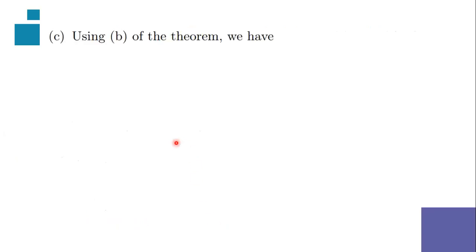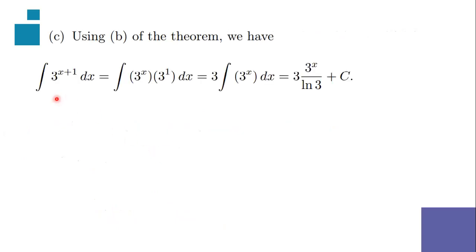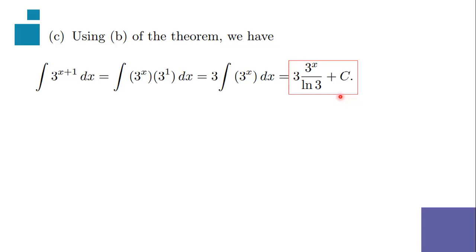For the third example, we will be using the second theorem again. The given is the integration of 3 to the (x+1) dx. Recalling the laws of exponents, 3 raised to the power of (x+1) is equal to 3 to the x times 3 raised to the power of 1. We have a constant 3, so we place it outside the integral symbol. That's 3 times the integration of 3 to the x dx, which equals 3 times 3 to the x over ln(3) plus C.